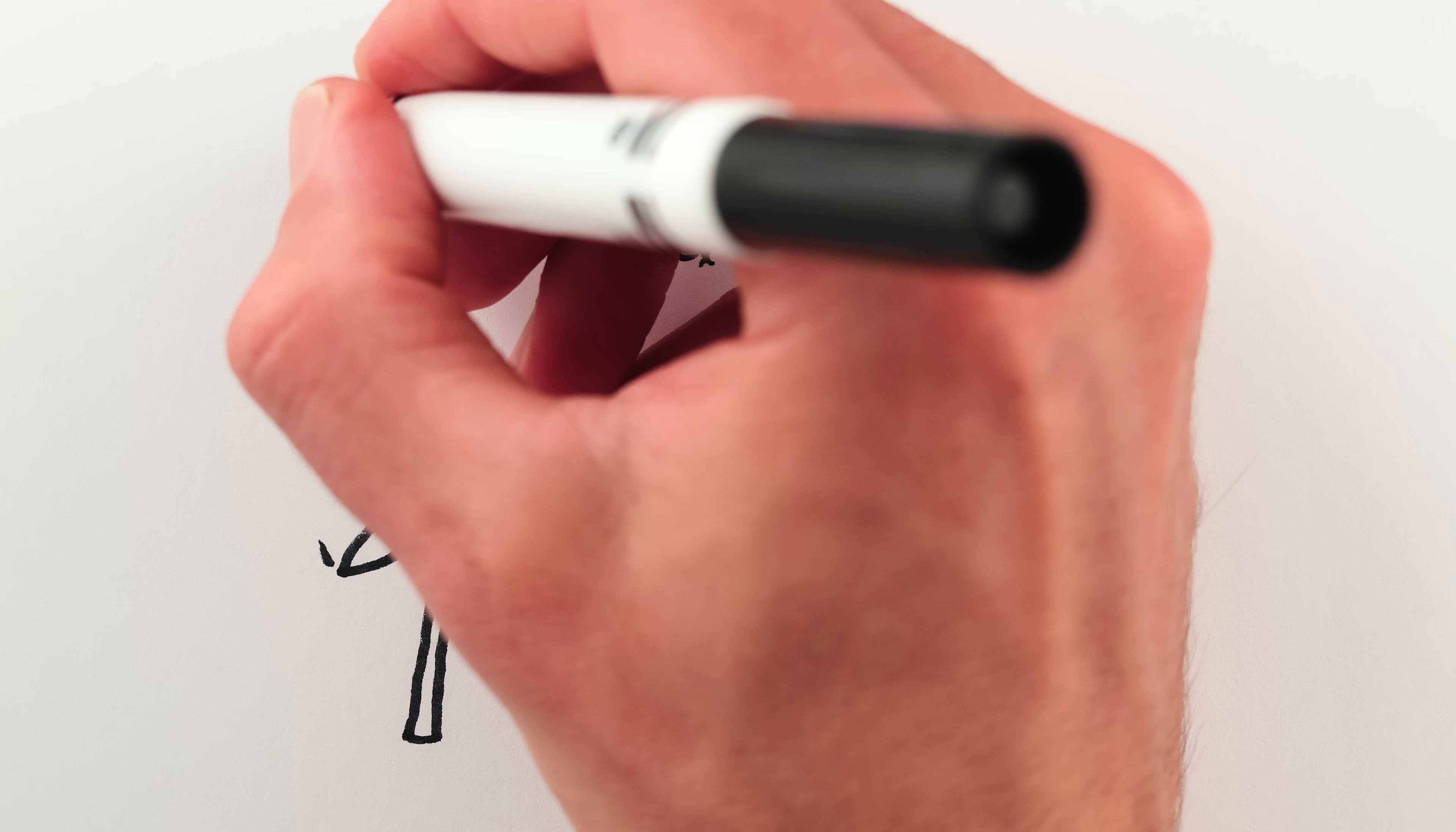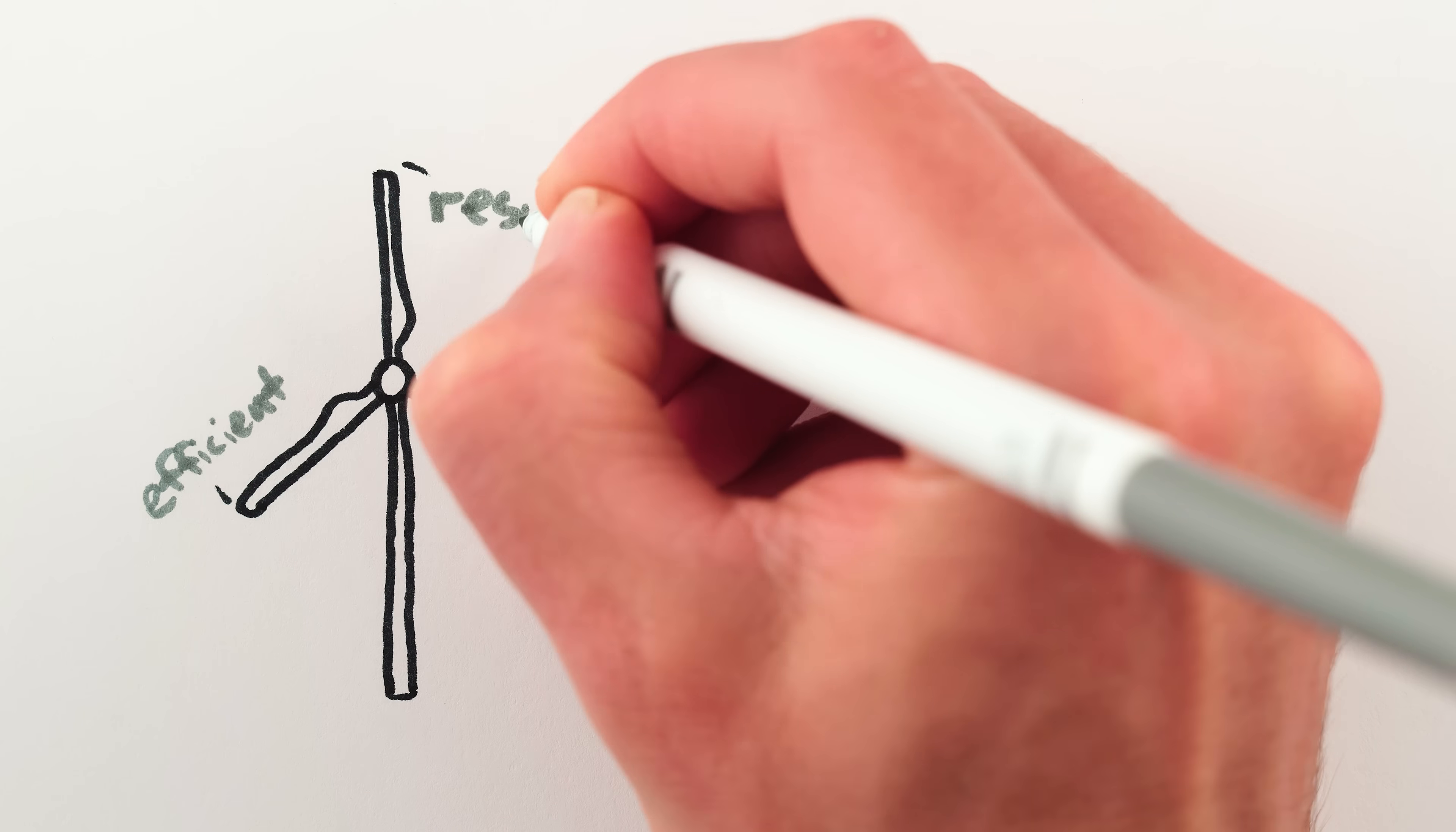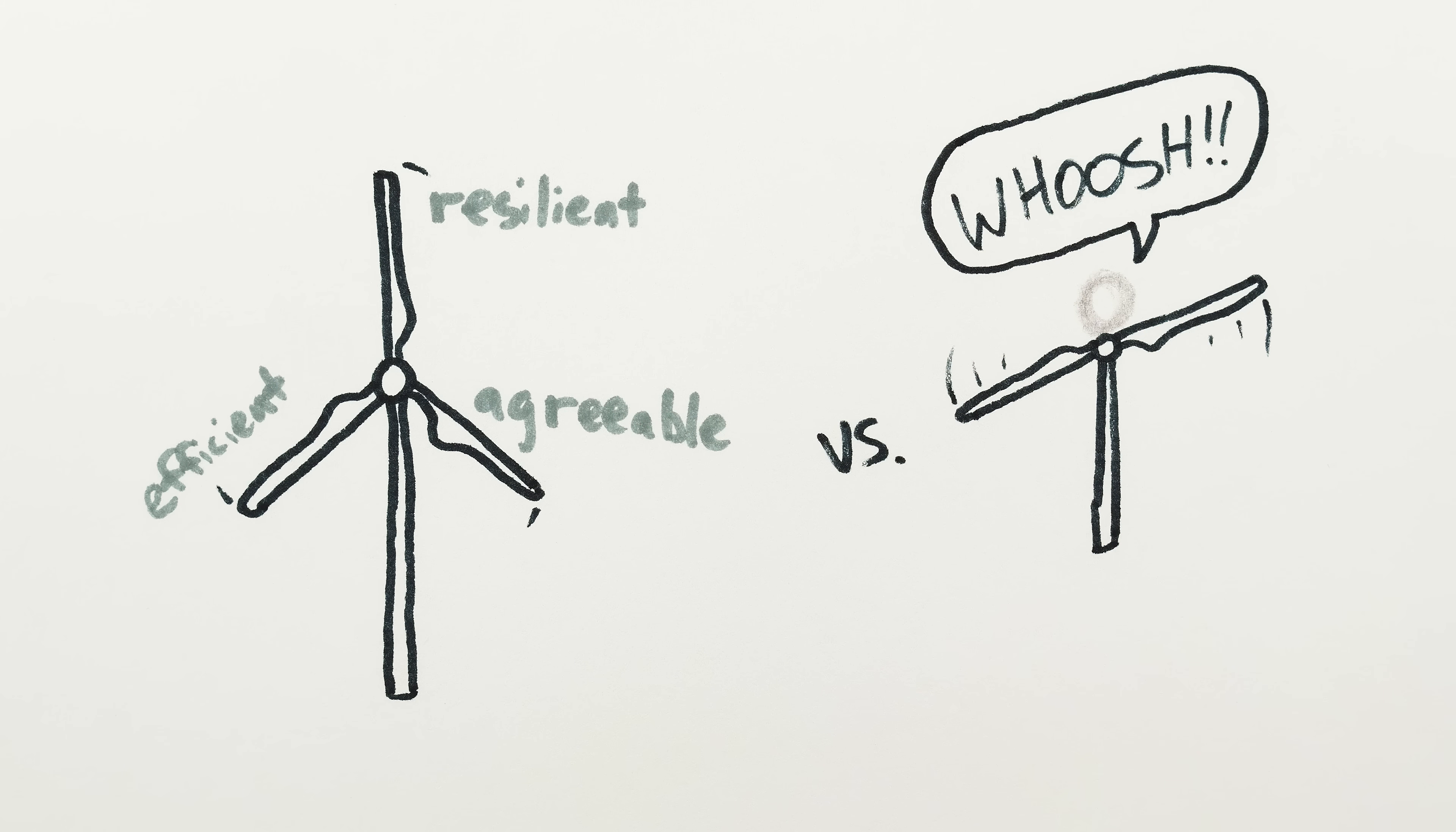Obviously we've glossed over some details, but essentially that's it. Three good reasons that windmills have three blades. Physics says that three-blade rotors are most efficient, engineering says that for the same cost three-blade rotors are less likely to break than two-blade ones, and human comfort says they're not noisy, headless stick figures.